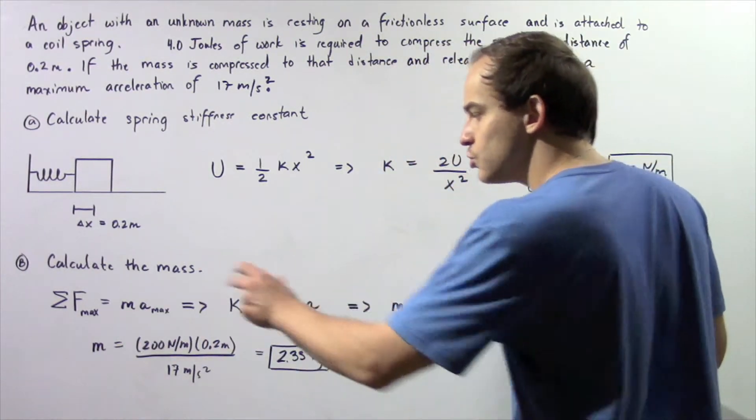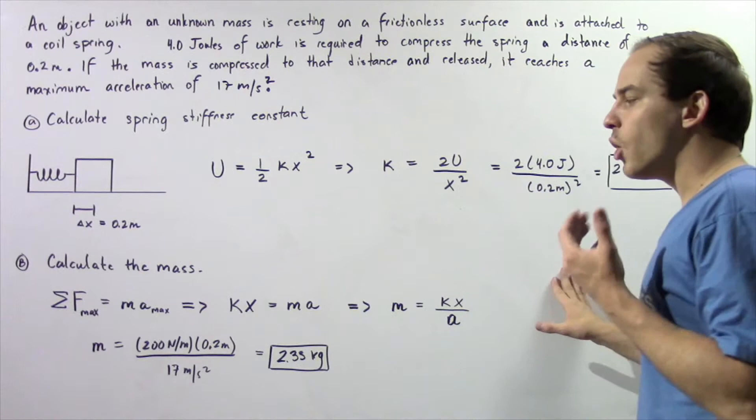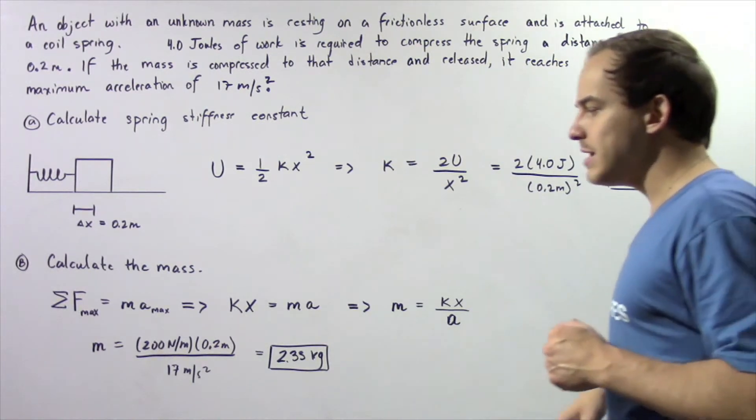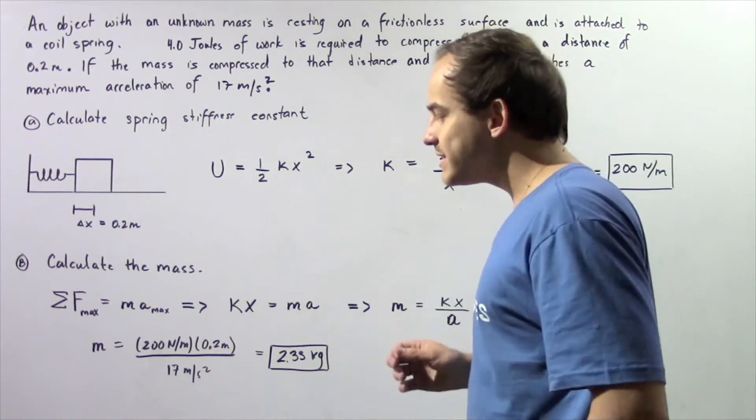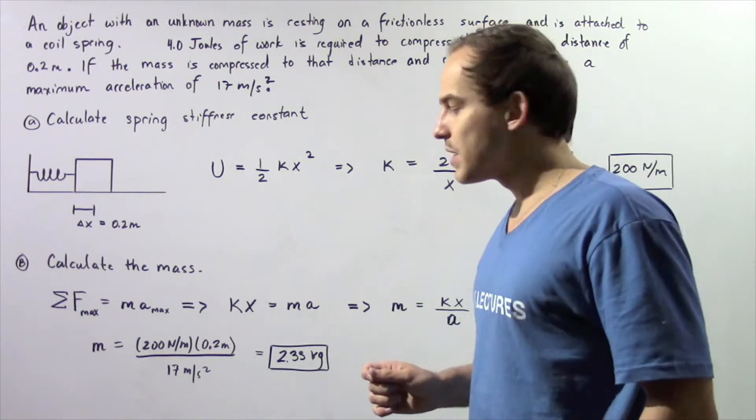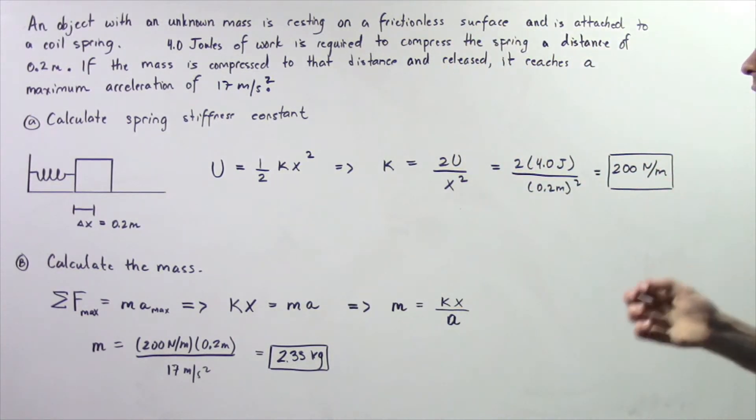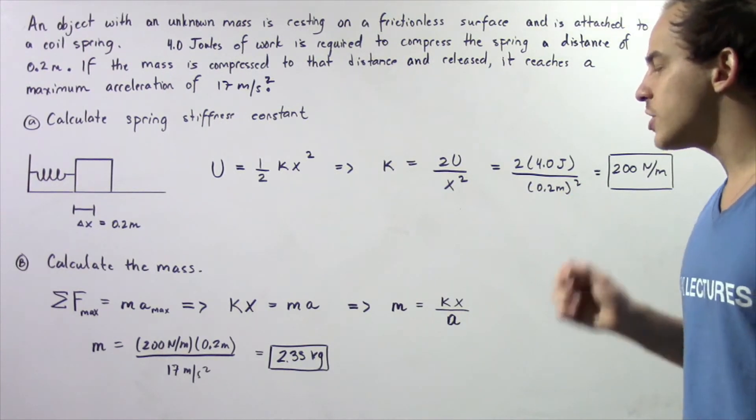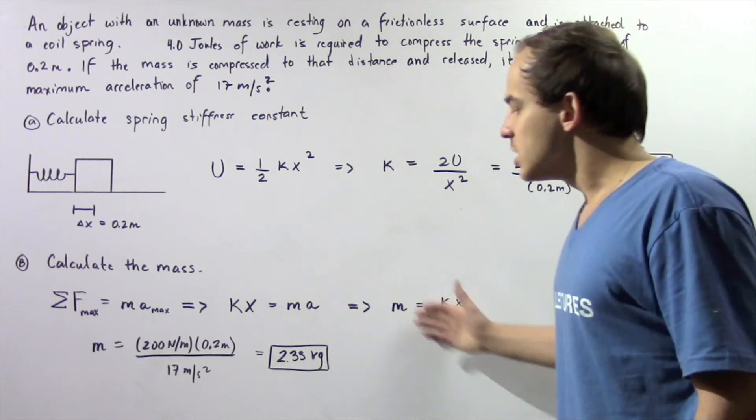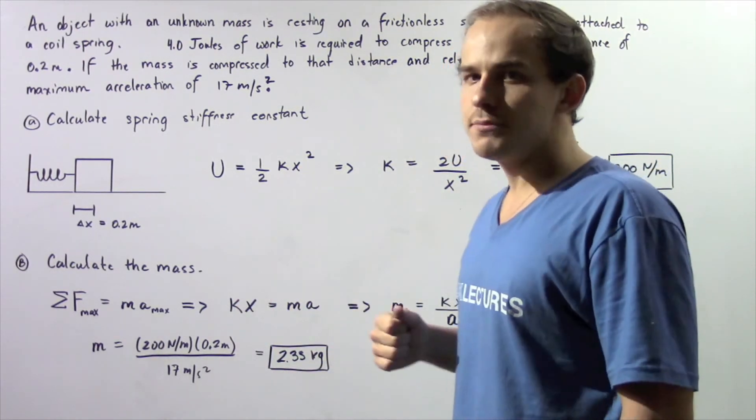So mass equals 200 newtons per meter multiplied by 0.2 meters, divided by 17 meters per second squared. We plug that into our calculator and get an approximate mass of 2.35 kilograms. This is the mass of our object.